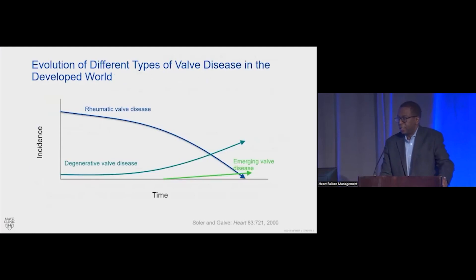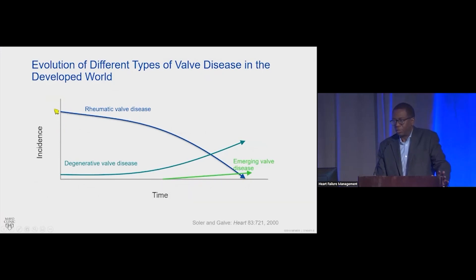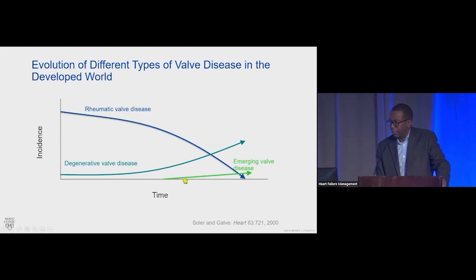Briefly reviewing the epidemiology of valve disease: valvular heart disease has changed in terms of etiology. Originally it was rheumatic heart disease — a lot of rheumatic mitral stenosis. This was the original form of valve disease we were most concerned about. In economically developed countries, there's been a decline in the incidence and prevalence of rheumatic heart disease.